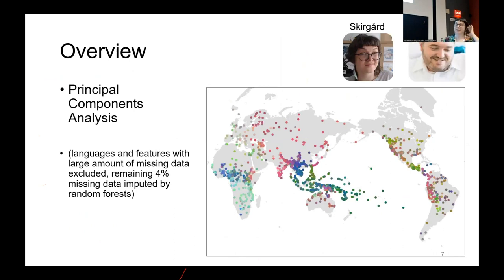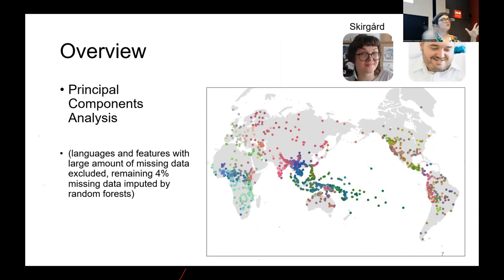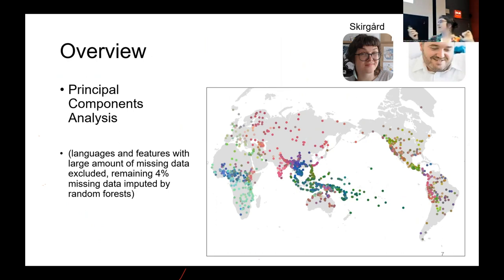If we take the first two components and add a third, we can map those onto color dimensions RGB — this was Damian Blasi's idea. We map the red hue to the first component, green to the second, and blue to the third. So the color space becomes the three-dimensional PC space, meaning the more similar two languages are in color, the more similar they are in their position in this coordinate space.